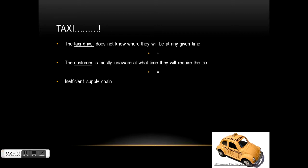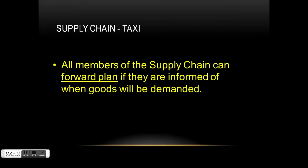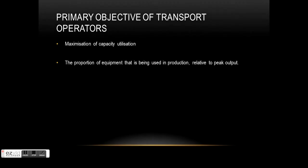The inefficiency shows in two ways: either taxis are waiting one behind each other in the city waiting for customers at certain times of day, or - if you're at Flinders Street at 1 o'clock on a Saturday morning - you'll see 300 people waiting for a taxi with none in sight. How do we minimize that? Through forward planning. If everyone in the supply chain is informed of where they'll be and what they'll need at a particular time, we can have an efficient supply chain.